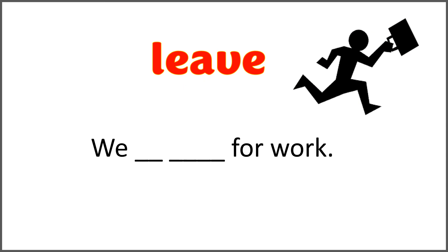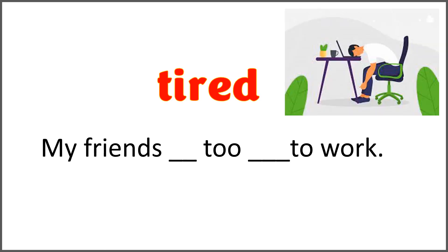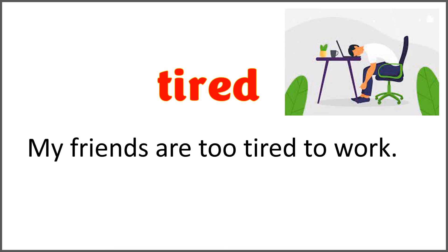The given word is 'leave.' We blank blank for work. Use the correct form of 'leave' with 'are' to complete this sentence. We are leaving for work. Oh no, are you running late? The given word is 'tired.' My friends blank too blank to work. Use the word 'tired' with 'are' to complete this sentence. My friends are too tired to work. Oh dear, they are looking very tired.